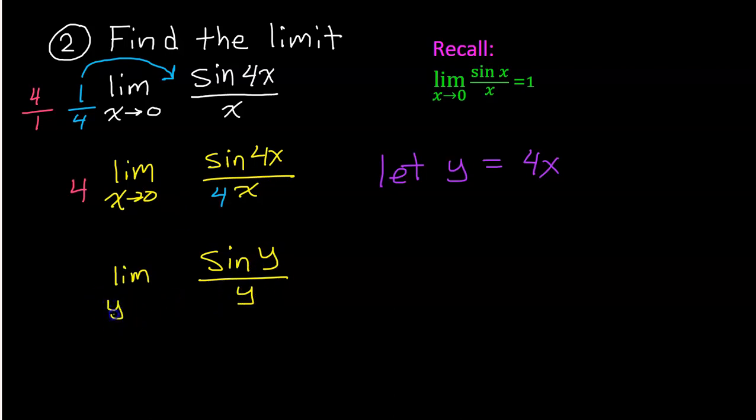Take a moment and think about why this is okay. Remember that y is 4x. So if x is approaching 0, well, that means 4 times 0. So if x is approaching 0, of course, y is also approaching 0. And then I still have the red 4 out in the front.